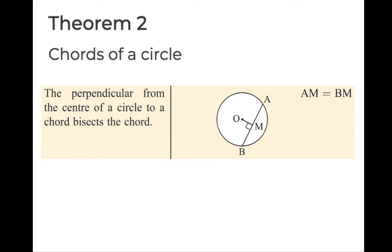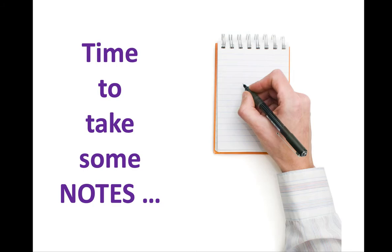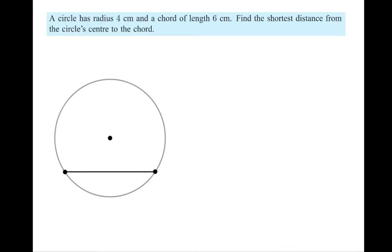Now that you've added to your study guide, let's apply this theorem and solve a couple of problems. Let's take some notes — do this in your notebook. First question: a circle has a radius of four centimeters and a chord length of six. Find the shortest distance from the circle's center to the chord.